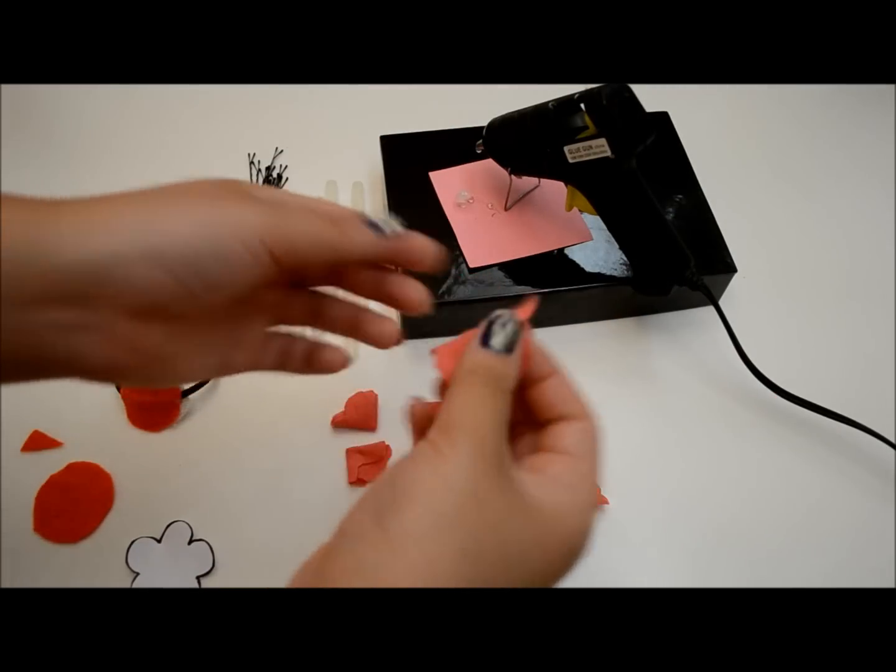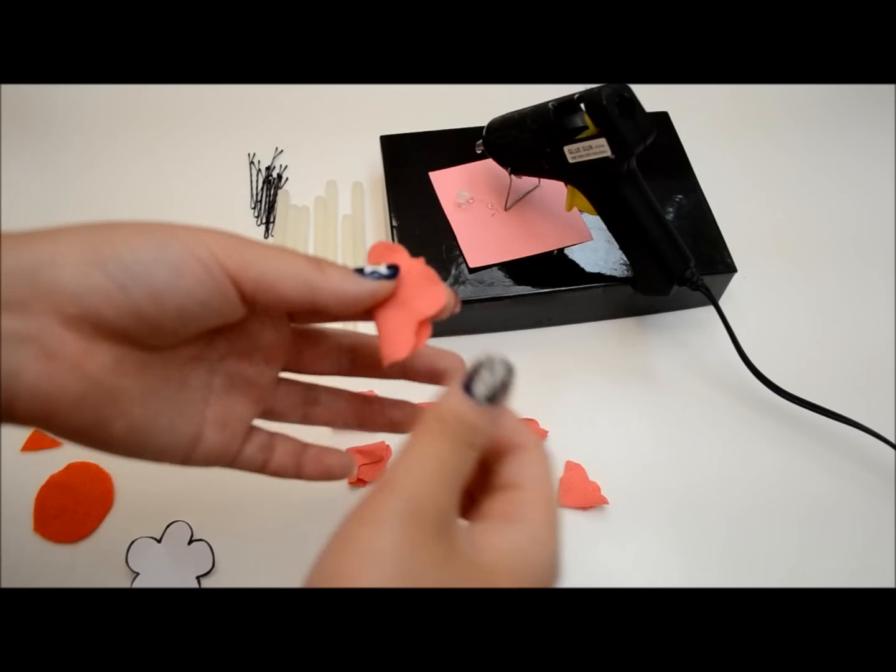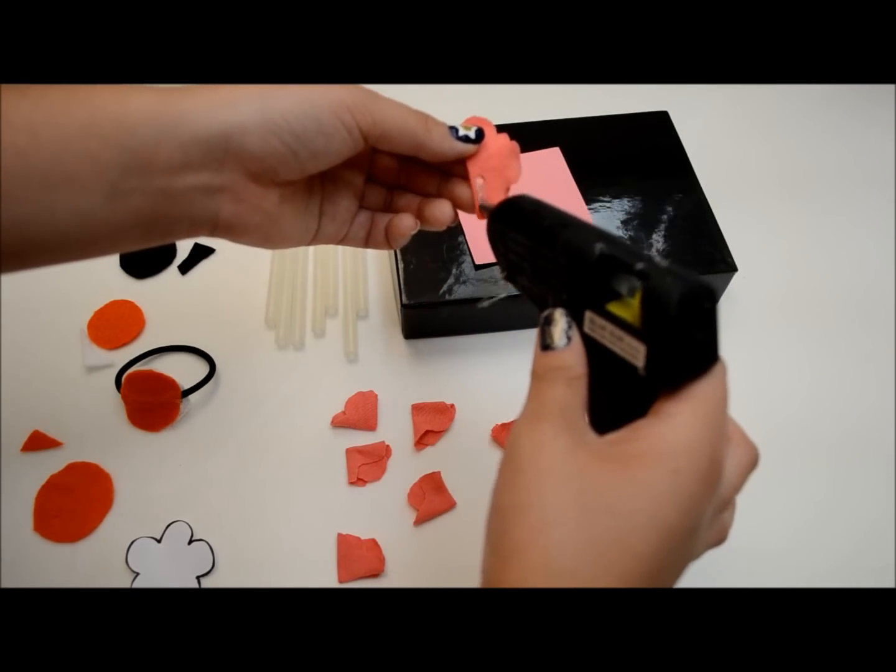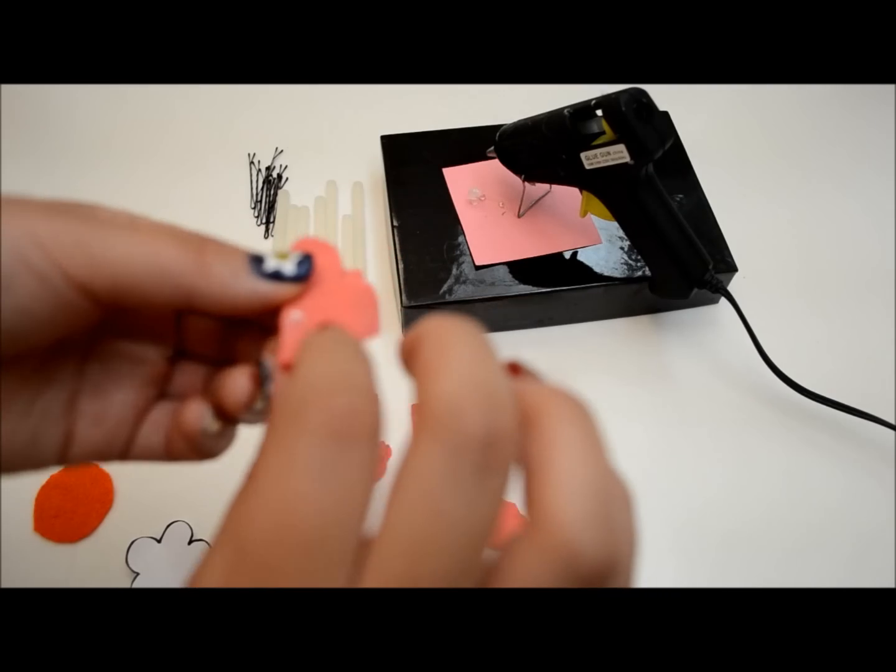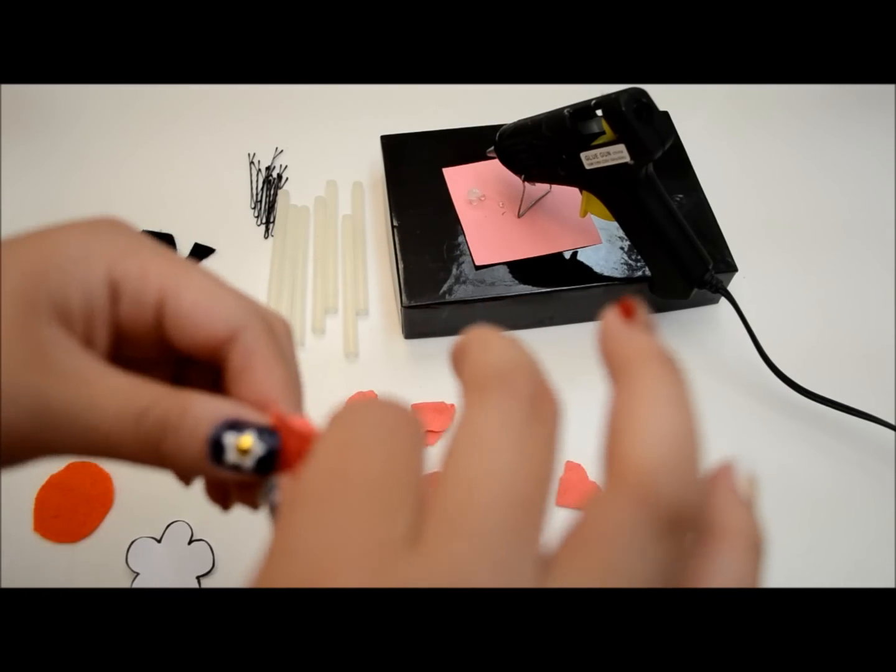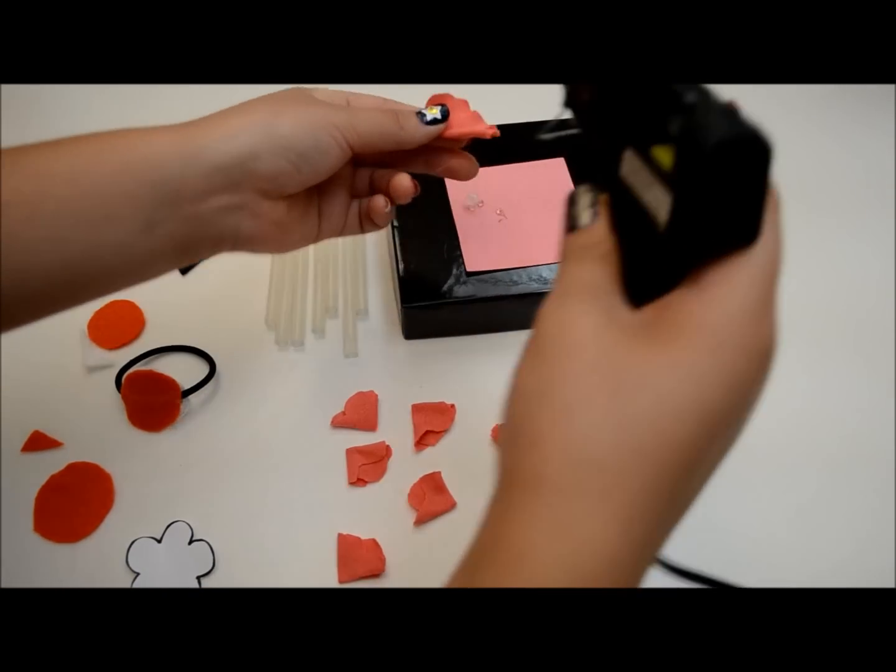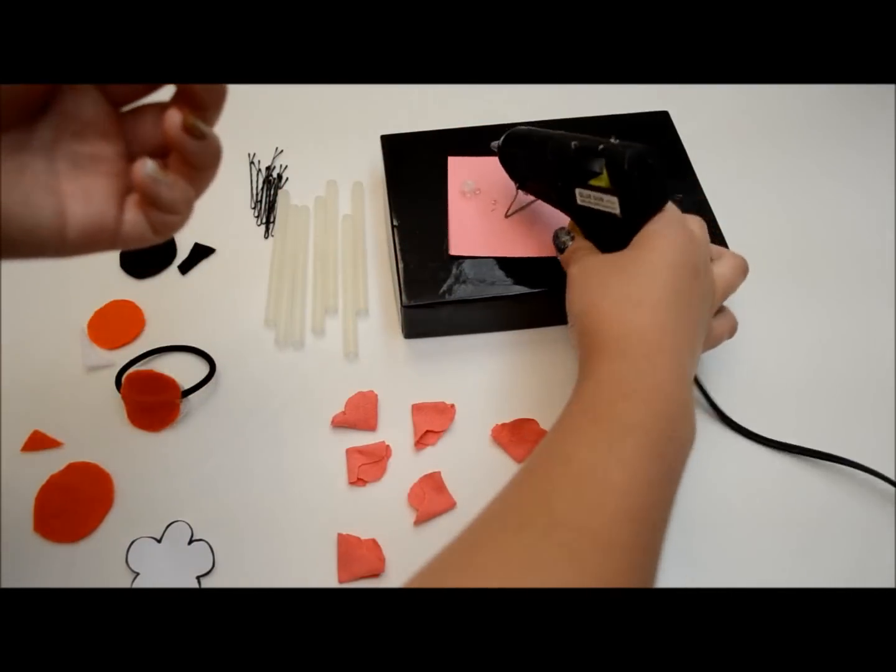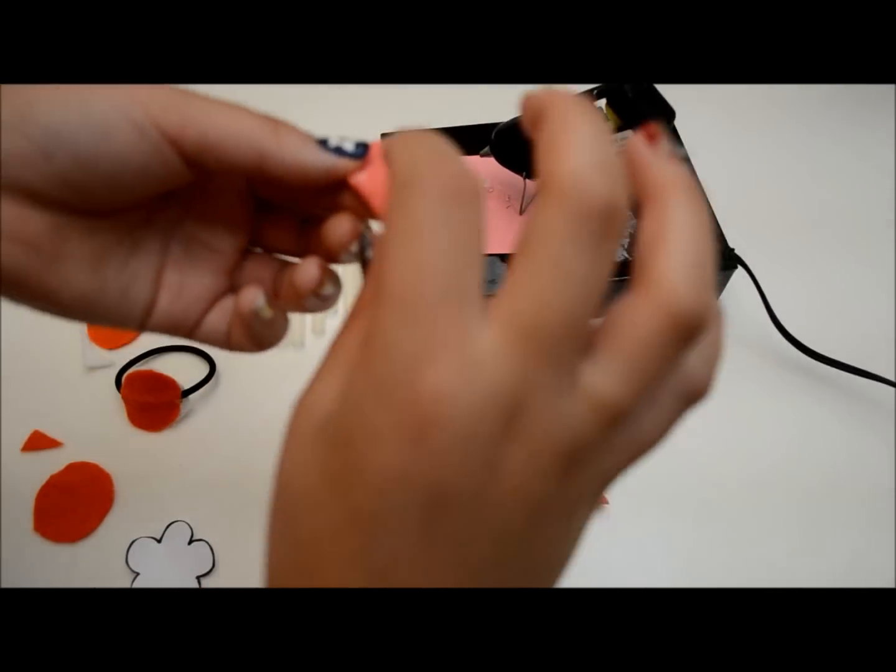For the last flower, fold it in half like the other flowers, but instead of putting a dot of glue in the center, place a line of glue on one half of the flower and then roll it up so it makes a cone shape. While you roll it, keep adding glue so it will stay. This will be the center of your flower.